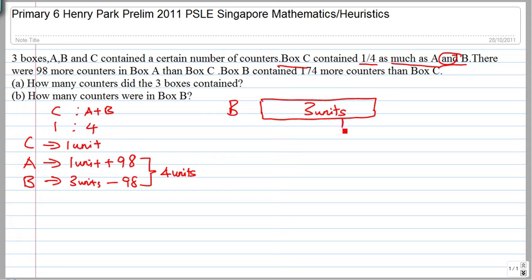So since it's minus 98, can I draw positive 98 here? Because modeling is all about comparison. And you know box B has got 174 more than box C. Now box C has got one unit, right? So box C, there will be one unit. And you know that box B, when you take three units, when you minus off 98, you will still have 174 more counters than box C. So this portion here is actually 174.